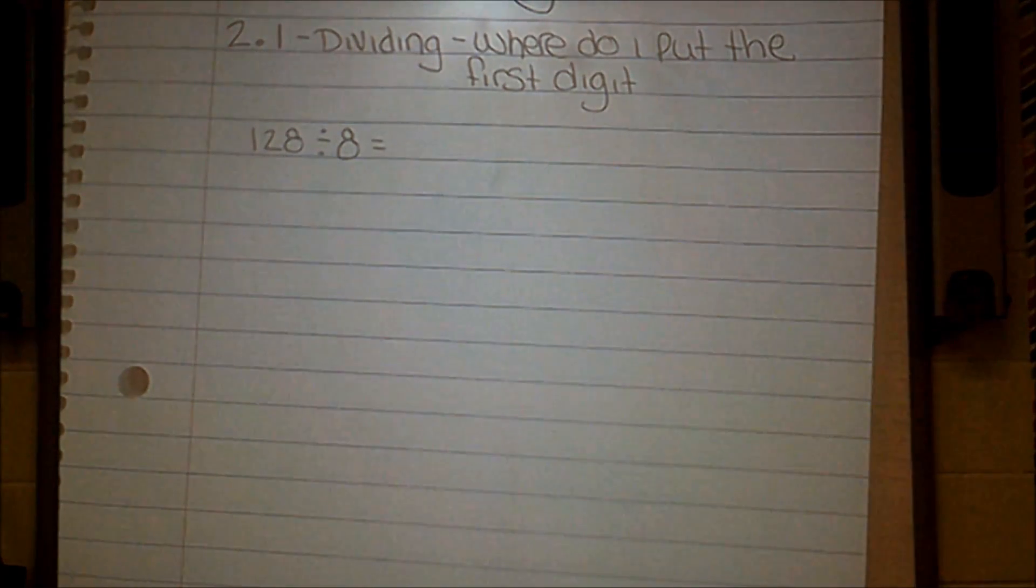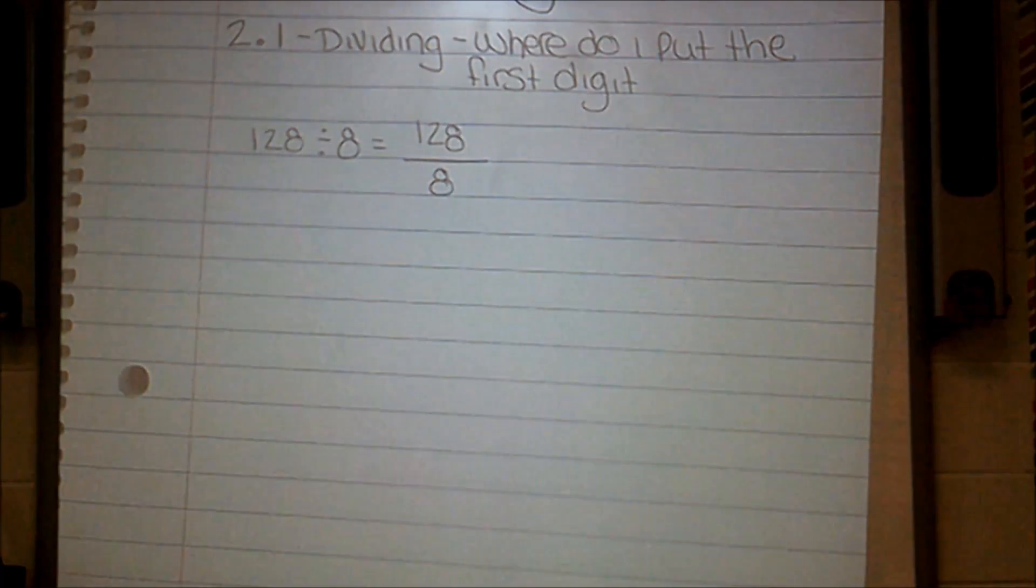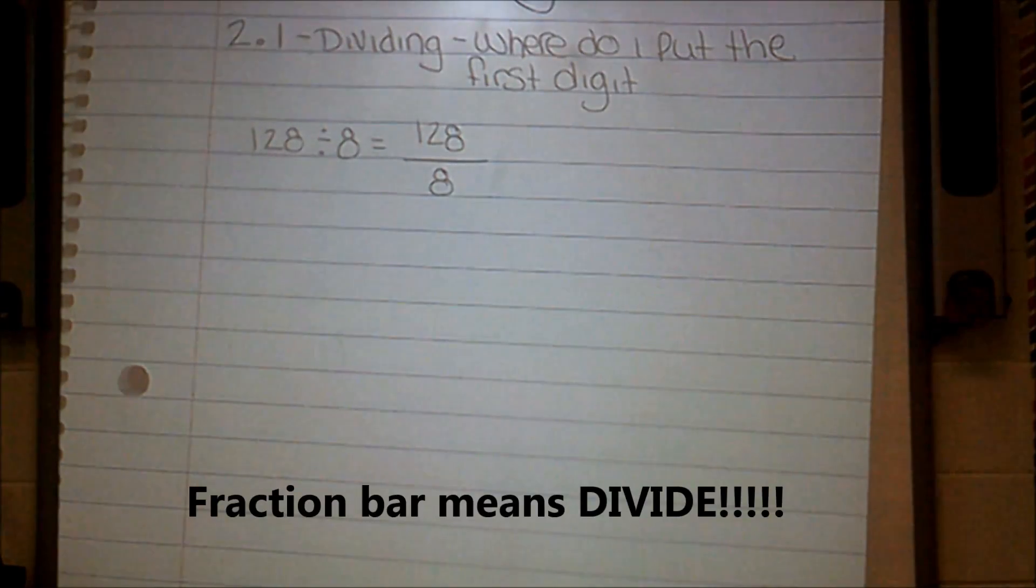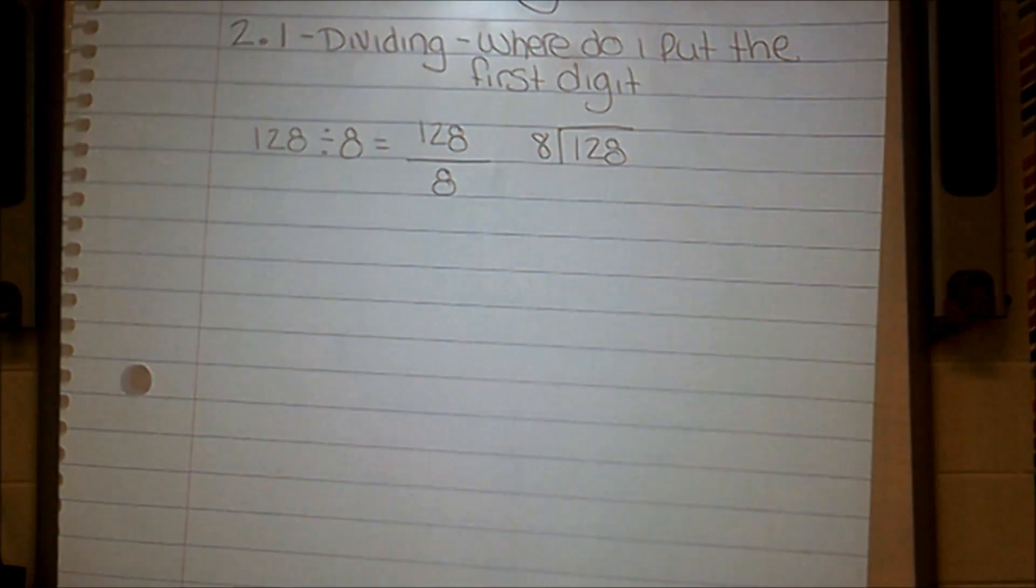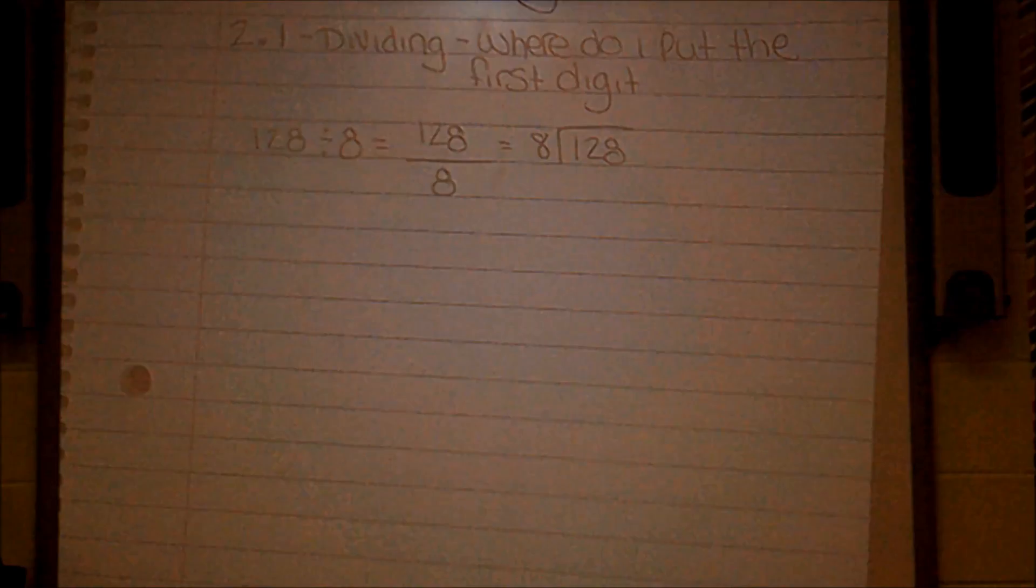The first problem that you see is 128 divided by 8. There are a couple of ways that I can write it. I can write it with a division symbol, or I can write it as a fraction, 128 over 8, because a fraction bar is nothing but division. They mean the same exact thing. Another way I can write it is with something I call a cave. They're all the same exact thing, and you will get the same exact answer.